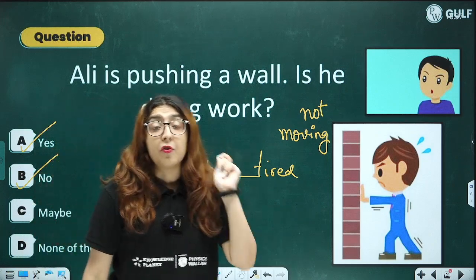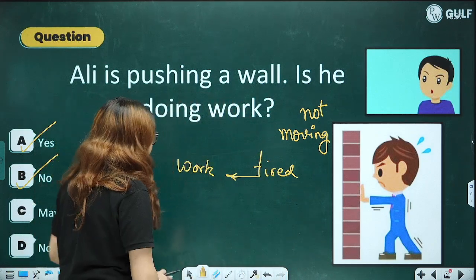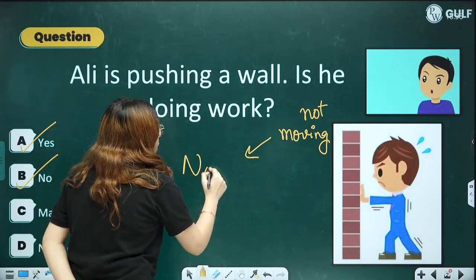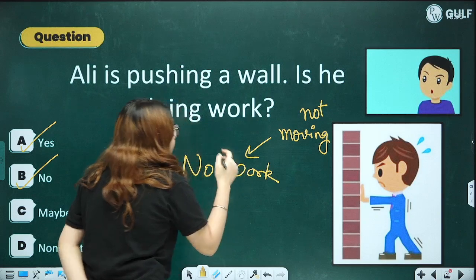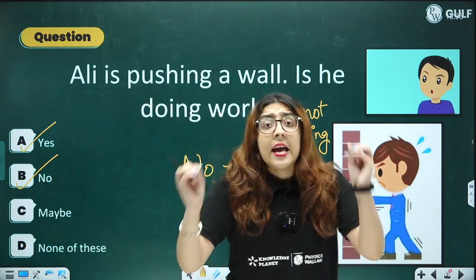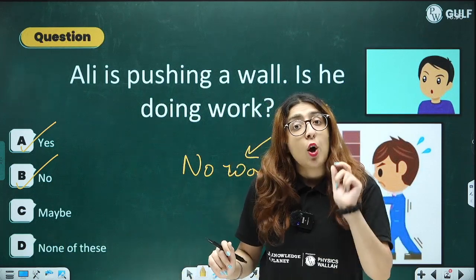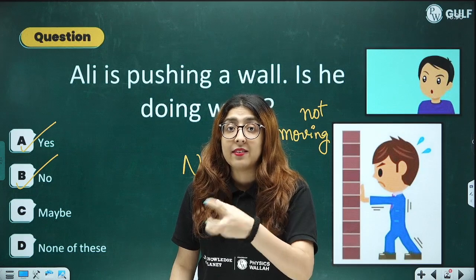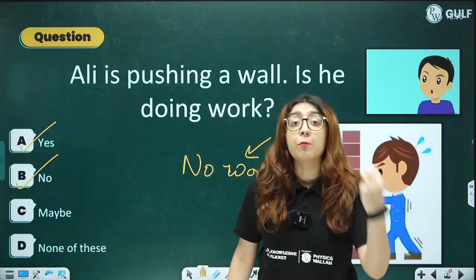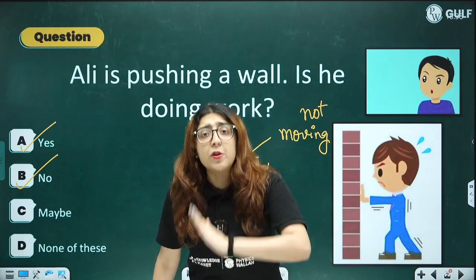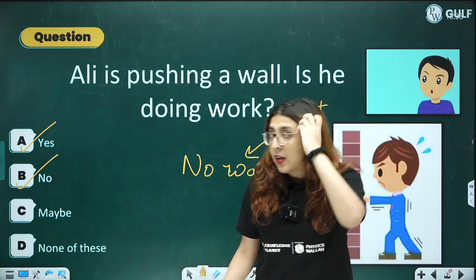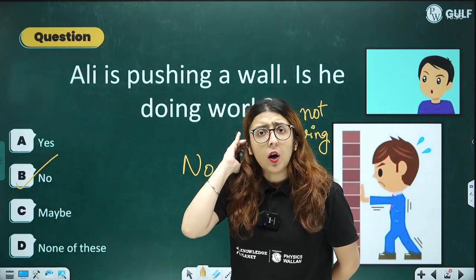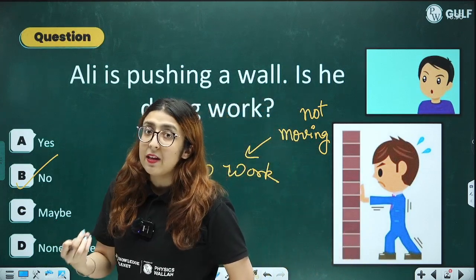In terms of physics, we are being very particular. As the wall is not moving, we are going to say no work is done — be it 3 hours, 4 hours, or 20 hours. In order to talk about work being done, there should be some movement taking place. The object should cover a particular distance; there should be some displacement.